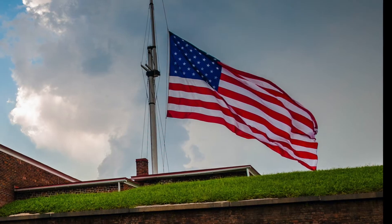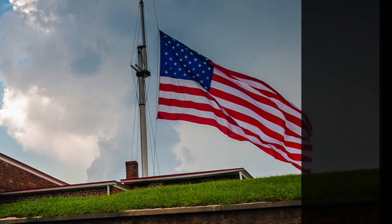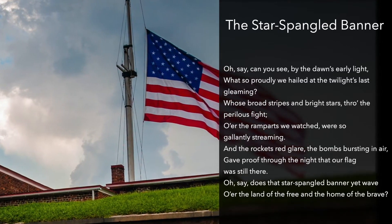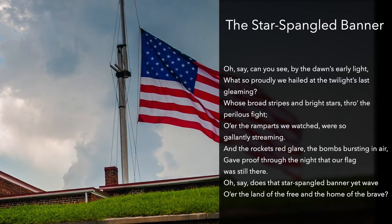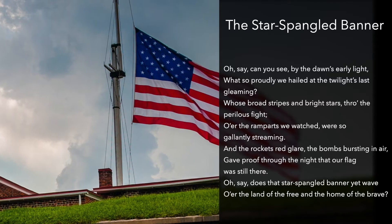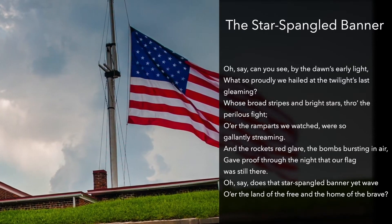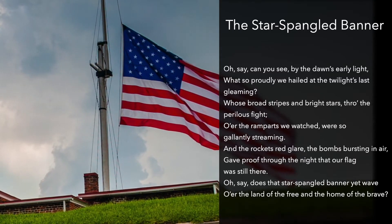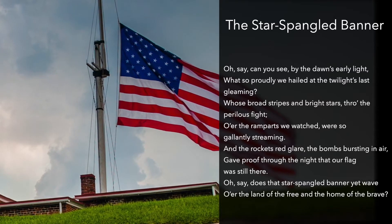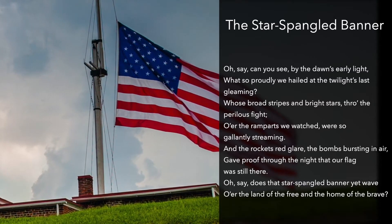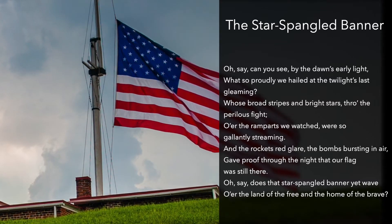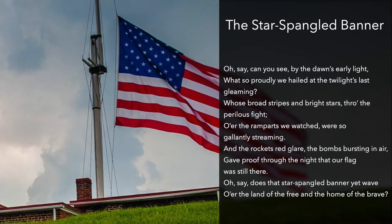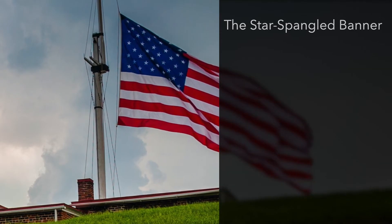Here are the words to the first verse of the national anthem. The Star Spangled Banner: Oh, say can you see, by the dawn's early light, what so proudly we hailed at the twilight's last gleaming? Whose broad stripes and bright stars, through the perilous fight, o'er the ramparts we watched, were so gallantly streaming? And the rocket's red glare, the bombs bursting in air, gave proof through the night that our flag was still there. Oh, say does that star-spangled banner yet wave over the land of the free and the home of the brave?